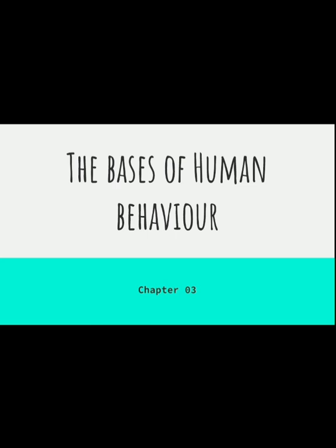Welcome back. We are already done with the two chapters, and I hope you guys are following up. This is the third chapter, which is the basis of human behavior. This chapter deals with a very biological perspective towards understanding human behavior, elucidating the relationship of complex human behavior with biological perspectives as well as with the nervous system, particularly the brain, and how it is going to influence, predict, control, or bring a change to human behavior.